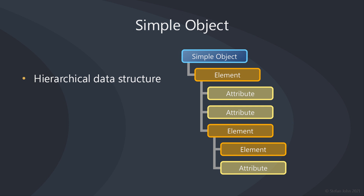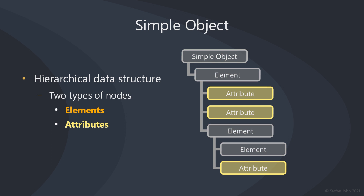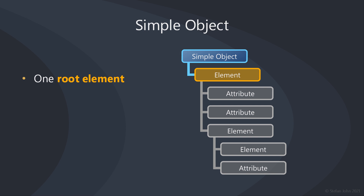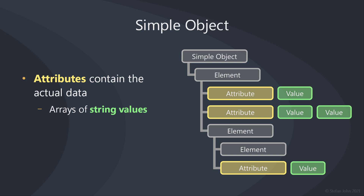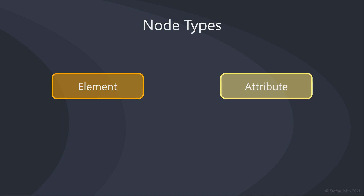A simple object is a hierarchical data structure that consists of two types of nodes, elements and attributes. A simple object has exactly one single root element. Elements can contain child nodes, attributes cannot. They contain the actual data as arrays of string values. Both node types are named.